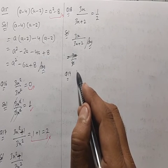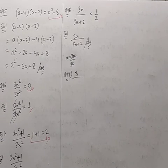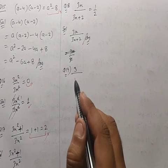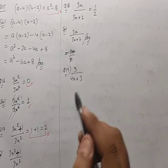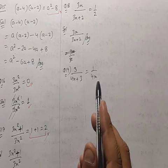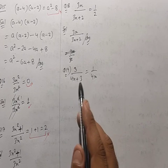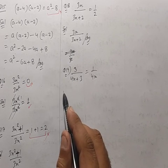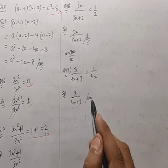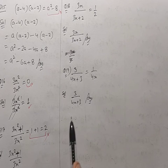Question 19: 3/(4x+3) = 1/4x is given. The denominator has a plus with unlike terms, so it cannot be simplified further. The correct answer is 3/(4x+3) — it cannot be solved further.